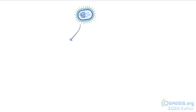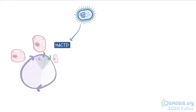Haemophilus ducreyi makes two toxins. One of them, called cytolethal distending toxin, or HDCDT, causes G2M cell cycle arrest, which means that it stops the cell cycle right when the cell is at its largest, in preparation for mitosis or cell division. Basically, the cell can't divide to restore to its normal size, and eventually this causes cell death.